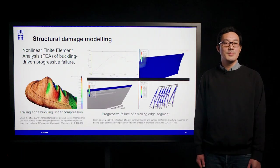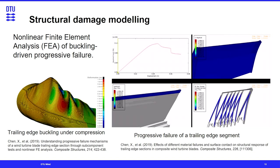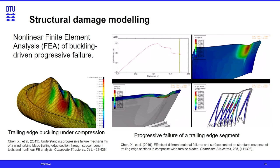In order to predict very complex structural damage behavior, we need a nonlinear finite element analysis. Here shows an example of a buckling-driven progressive failure of the trailing edge region in a large blade. By incorporating different structural nonlinearities in the model, we are able to predict the entire progressive failure procedure of this trailing edge segment. As shown in this video, local deformation is predicted, and material failure contact information is also included in this model to predict the very complex structural damage.